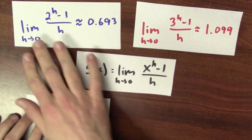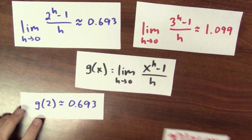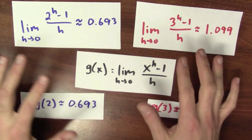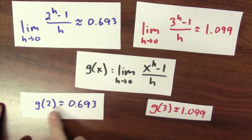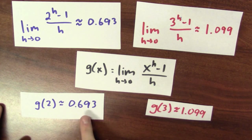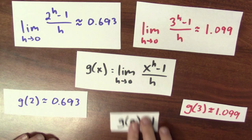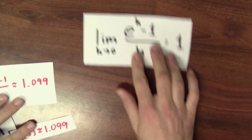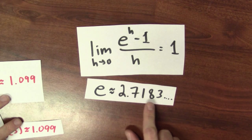If you think of this as a function that depends not on 2 or 3, you could define a function g of x as the limit as h approaches 0 of x to the h minus 1 over h. Then g of 2 is a bit less than 1, and g of 3 is a bit more than 1. If you're willing to concede that this function g is continuous, I've got a continuous function where plugging in 2 gives a value less than 1 and plugging in 3 gives a value more than 1. By the intermediate value theorem, there must be some input so that the output is exactly 1. I'm going to call that input e. In other words, e is the number so that the limit of e to the h minus 1 over h as h approaches 0 is equal to 1, and this number is about 2.7183.